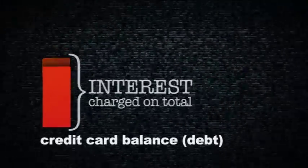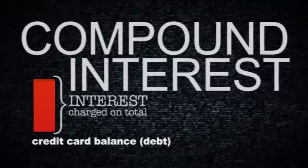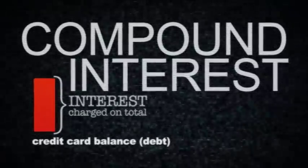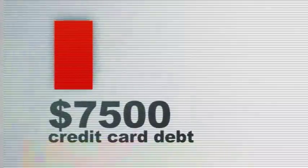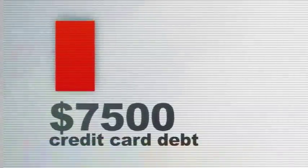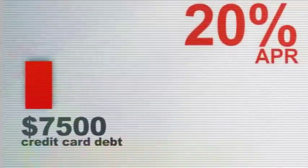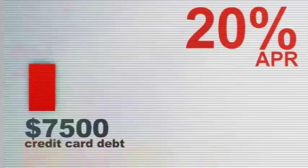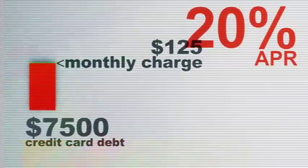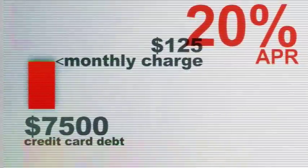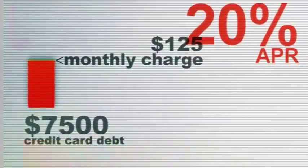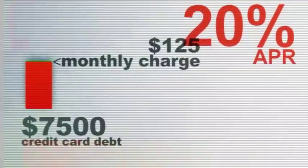It's being charged interest on interest — it's called compound interest. Here's a specific example: $7,500 in credit card debt with a 20% interest rate would result in a monthly finance charge of $125. That's just interest and not touching the principal amount owed — the $7,500.